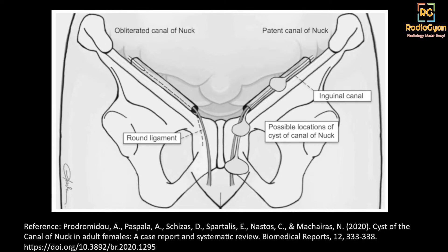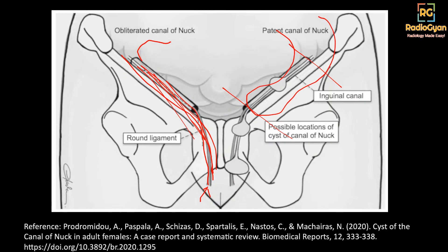This is a nice illustration from an article — quite elaborate and worth reading. On the normal side, the canal of Nuck extends along the round ligament and reaches up to the labia majora in females. Normally the entire portion gets obliterated by the first year of life. If it doesn't obliterate at some part, various pathologies arise: if only the middle portion is patent, it gives a cyst of the canal of Nuck; if it is open superiorly but closes inferiorly, it gives a hydrocele of the canal of Nuck; if the superior portion is obliterated but it remains open inferiorly, it gives an encysted hydrocele.